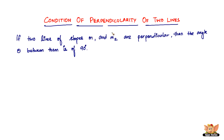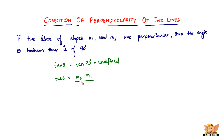What it has to do with the slopes is what's important now. We know that slope is given by tan theta, and here the angle between the two lines is 90 degrees. Tan 90 degrees, as we all know, is undefined. So we need to work with the formula: tan theta equals m2 minus m1 divided by 1 plus m1 times m2.